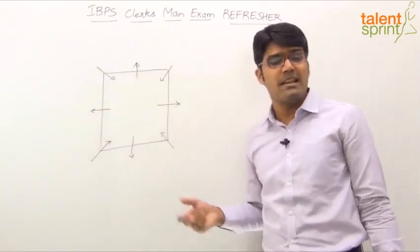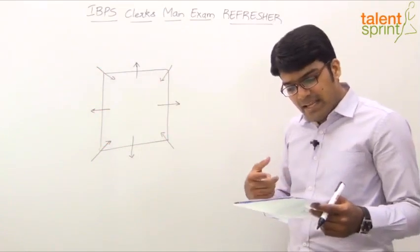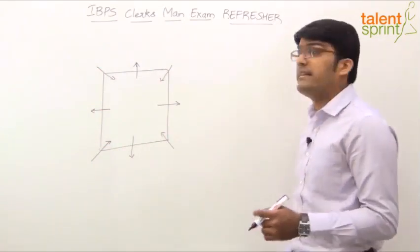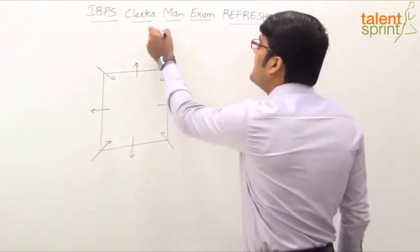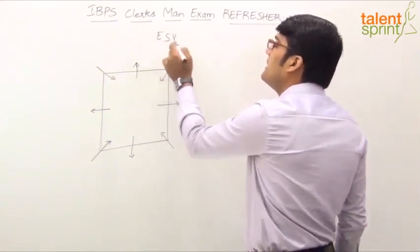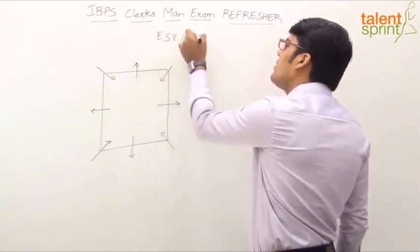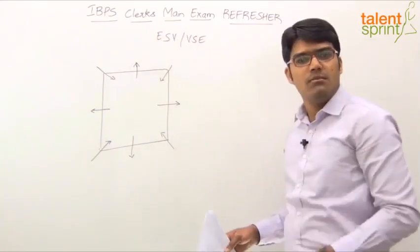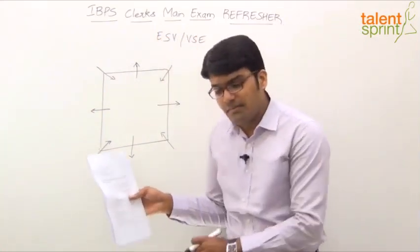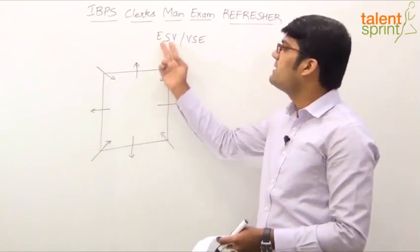So it doesn't really make a difference. Now, here he says, S is an immediate neighbor of both E and V. When is it possible? S is between E and V. S should be between E and V. Now, there are two possible cases. It can be ESV or VSE. In both the cases, you see that S is between E and V.